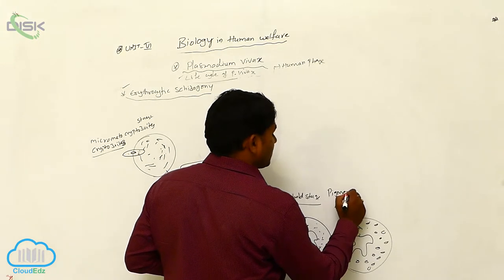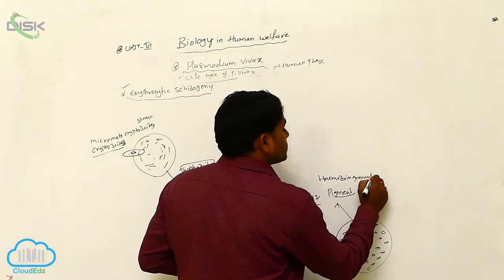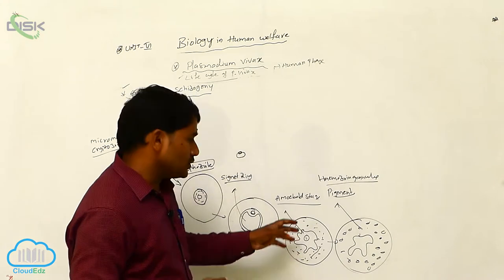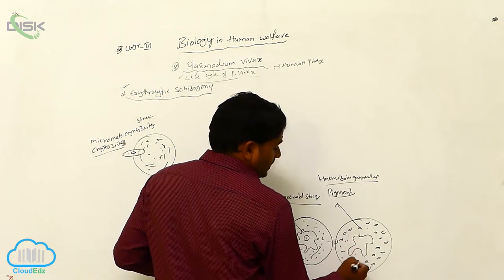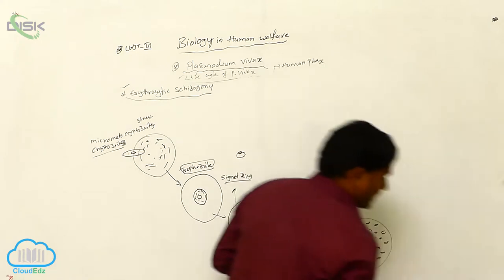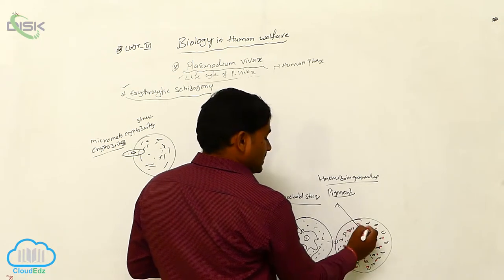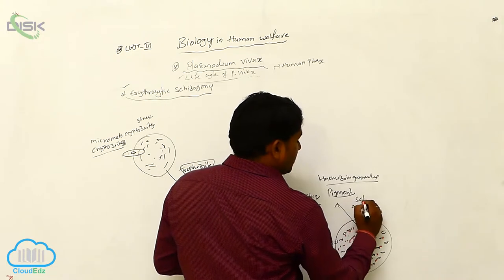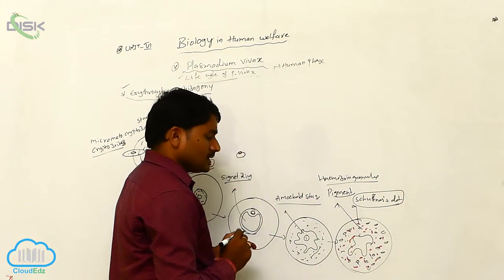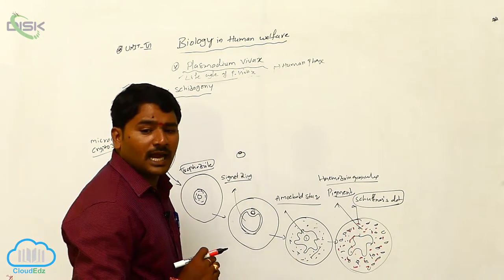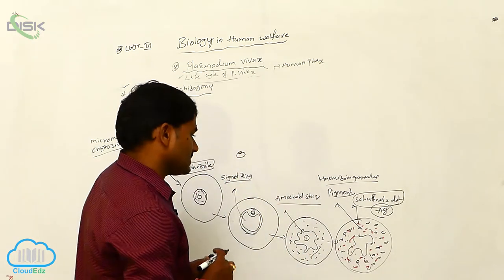Hemozoin granules are nothing but pigments — the pigments produced by the hemoglobin destruction. Along with the hemozoin granules, there are some red color dots present. These red color dots are called as Schaffner's dots. Schaffner's dots are nothing but antigens produced by the malaria parasite.